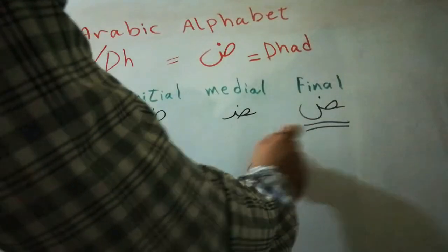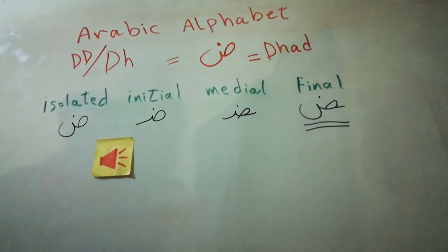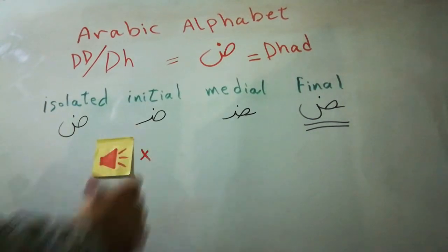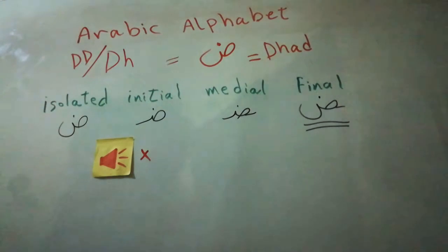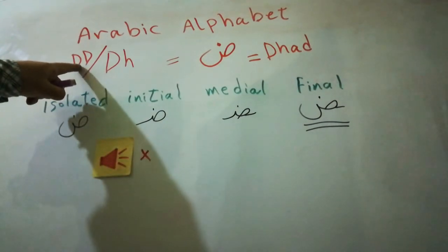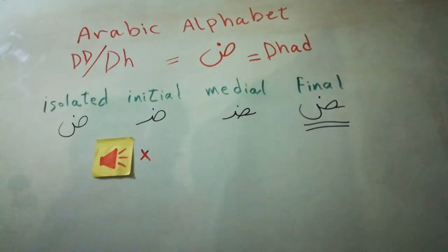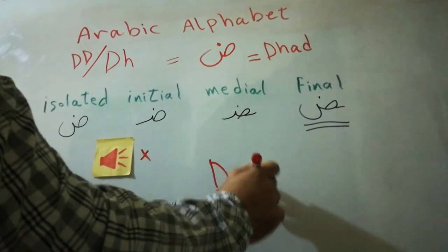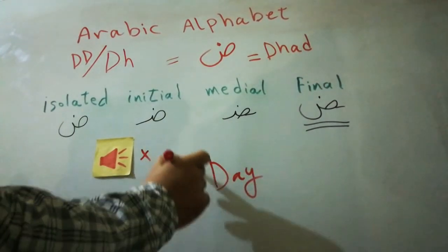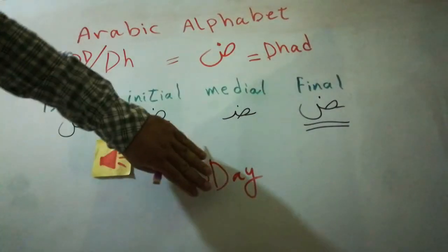I'm going to write this out and go over the pronunciation. As I said, unfortunately there is no equivalent pronunciation in other languages, because this is an Arabic-specific letter. All I can say is it's like a strong D. For example, take the word 'day' — imagine saying it with a heavy, emphatic D. That's the closest approximation.